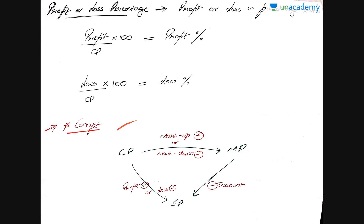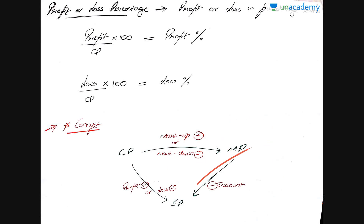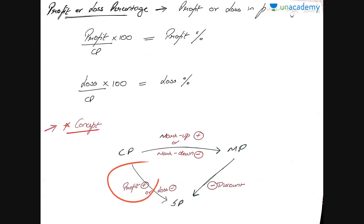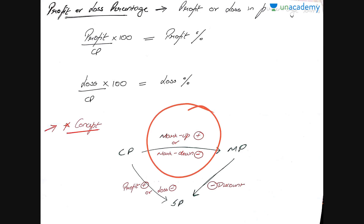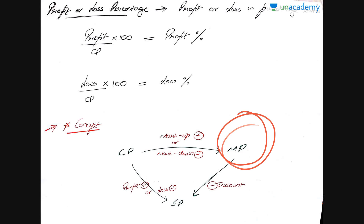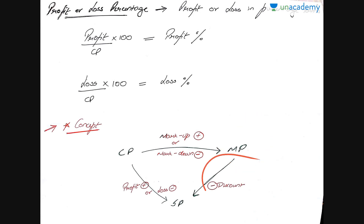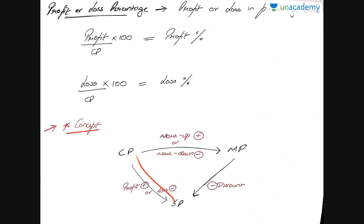Now let's look at this mind map where all the terminologies are illustrated. This is the cost price at which I'm buying the product. I mark it up or mark it down to arrive at the marked price. Then I give a discount on the marked price to come to the selling price. The difference between the selling price and the cost price is my profit or loss. Discount always happens on the mark price, and the difference between CP and SP gives profit or loss.